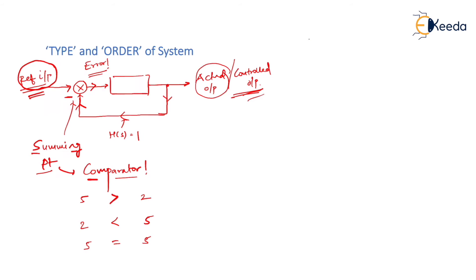So you understand why H(s) should equal 1 — if H(s) is not equal to 1, the actual output will not be compared with the reference input; instead, a scaled actual output will be used. Now we understand why we use negative feedback and why H(s) should equal 1. With this discussion we will now understand what is meant by type and what is meant by order of a system.